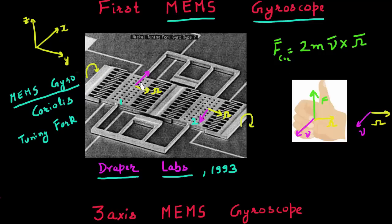We can apply this rule over here. If I take this particular case and rotate my fingers from my velocity vectors towards my angular velocity vector using my right hand, it would give me a Coriolis force which is trying to drown this proof mass into the plane. Similarly, if I do it for the second proof mass which is going in the opposite direction, rotating my finger from this pink arrow towards my yellow arrow would give me a resultant Coriolis force which is trying to lift this proof mass out of the plane.